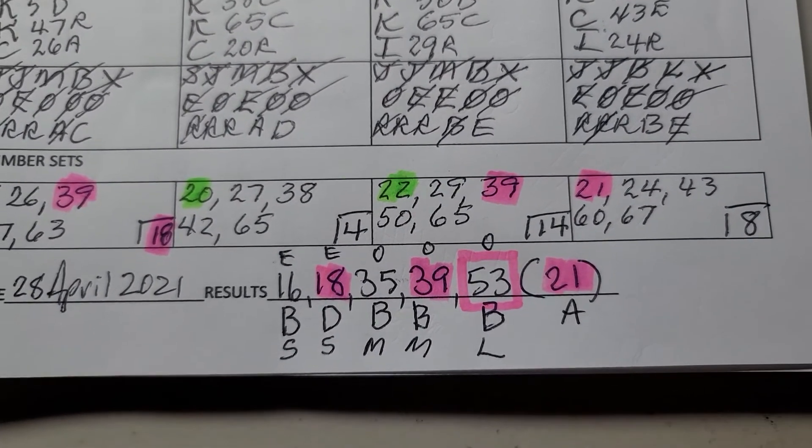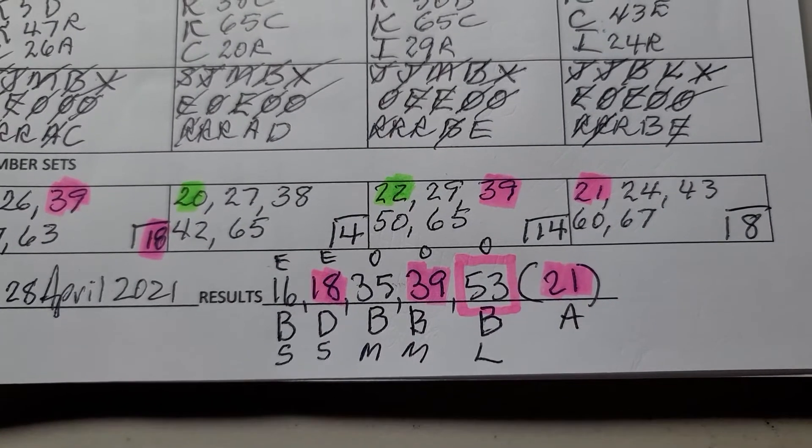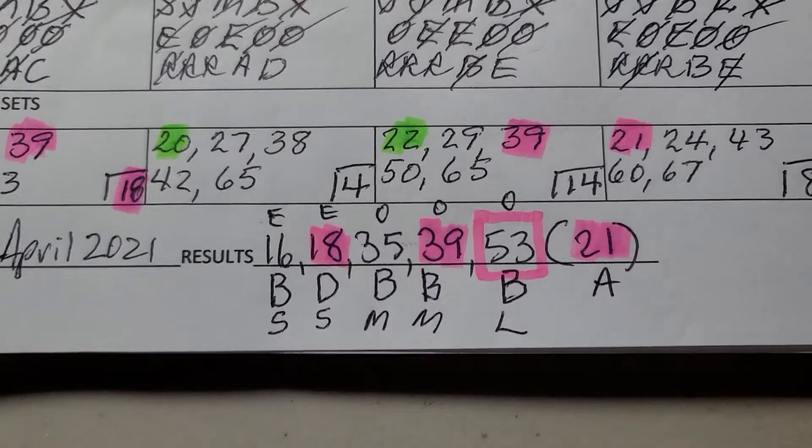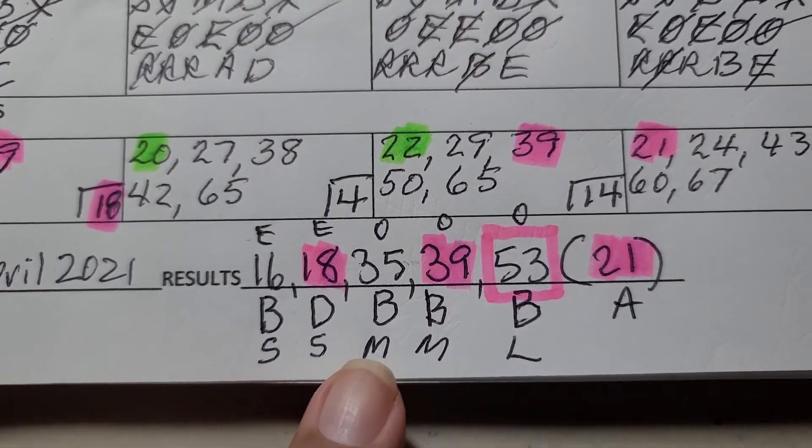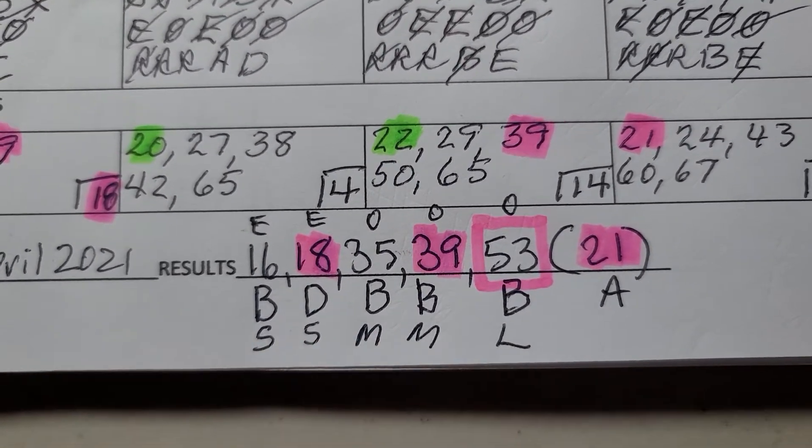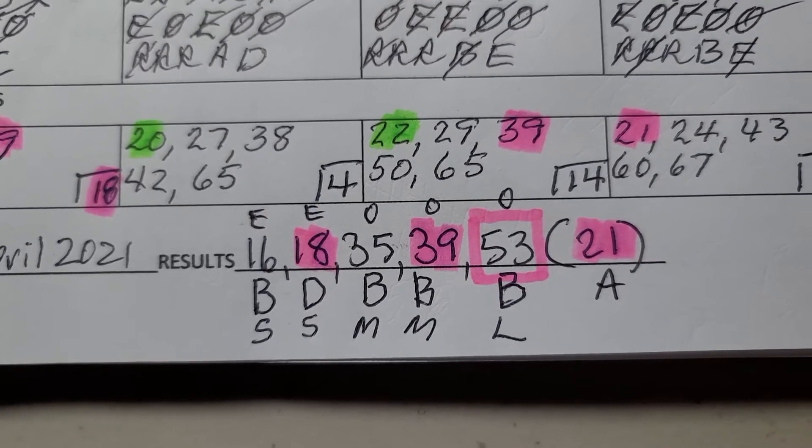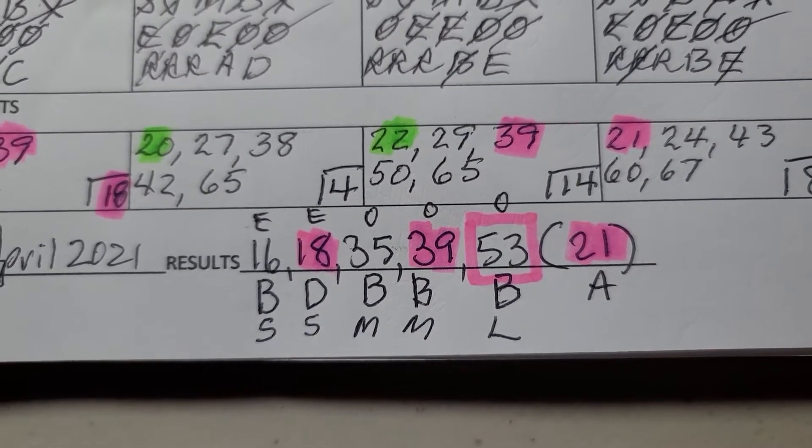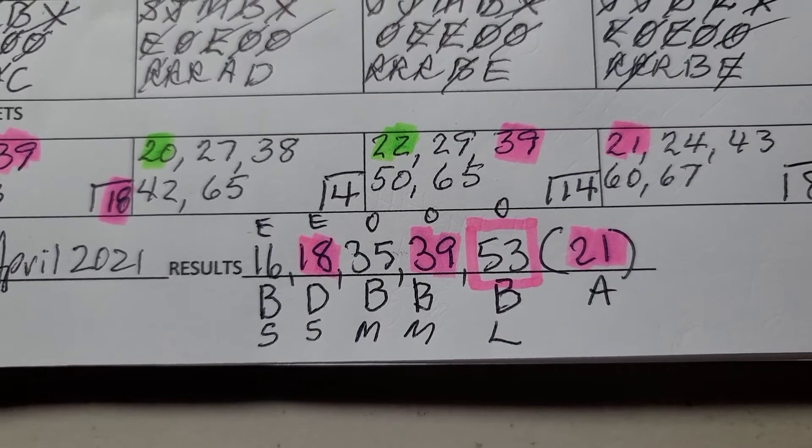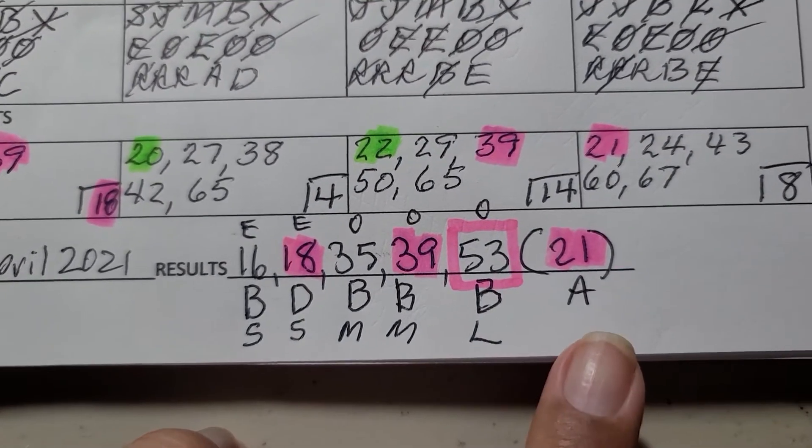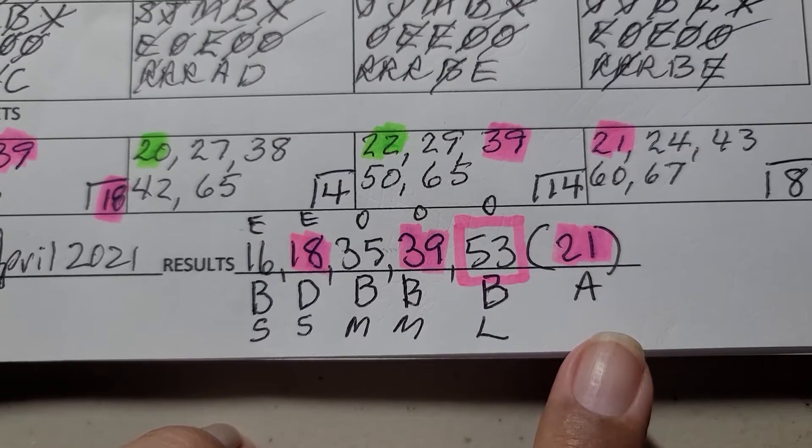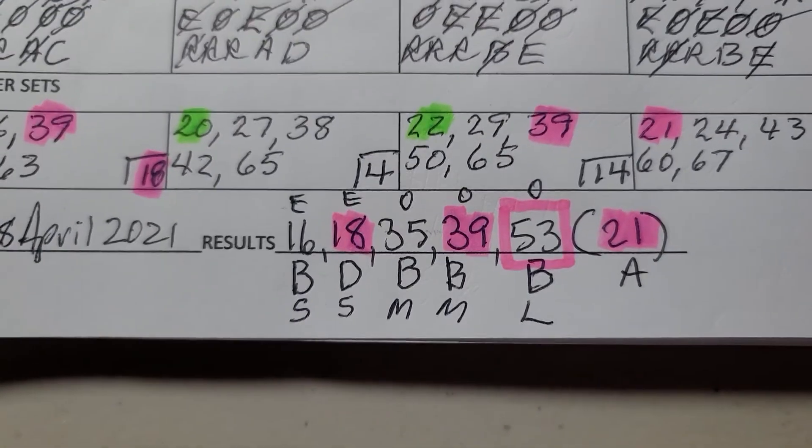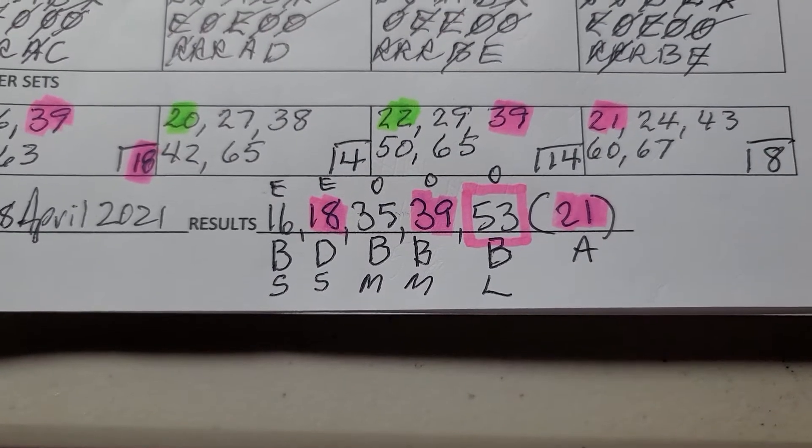As far as how the numbers went, all of the numbers including the PowerBall 21 were repeating numbers. We have four numbers that came from within the last eight games, so this is the category B numbers, and one number, 21, is a repeat from the last four games, and 18 was from the last 16 games.